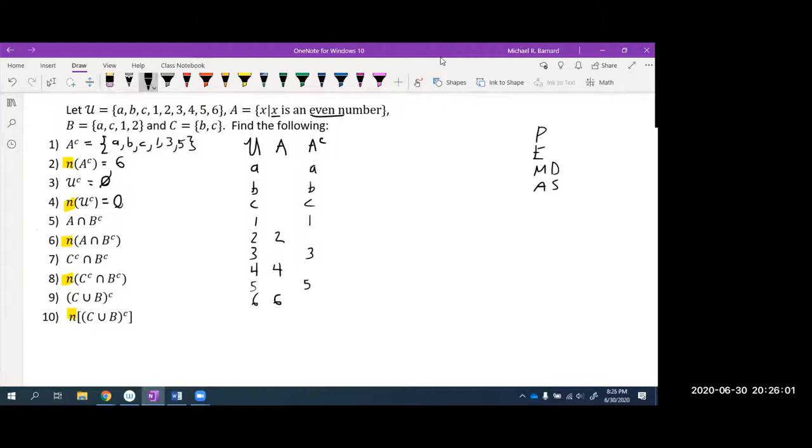So we have to follow the order of operations. There are no parentheses, but we do have an exponent, the complement. So before we can do the intersection, we have to figure out what B complement looks like. First, I'm going to write out B. B contains the letters A, C and the numbers 1, 2. So we have A, C, 1, 2, which means that the complement of B is everything that is outside. So B complement has little b, 3, 4, 5, 6.